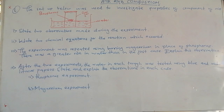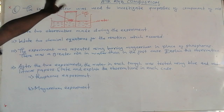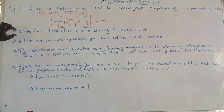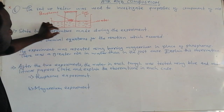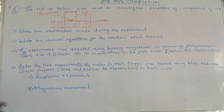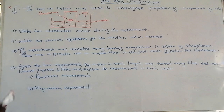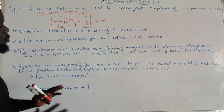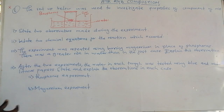The setup below was used to investigate properties of components of air. We have phosphorus, we have a gas jar, and we have water. State two observations made during the experiment — meaning during the process, as the experiment proceeds, there are some observations that you can see. An observation is something that you are able to see, smell, touch, feel, in terms of color, density, weight. Those are some of the physical properties in terms of observations.